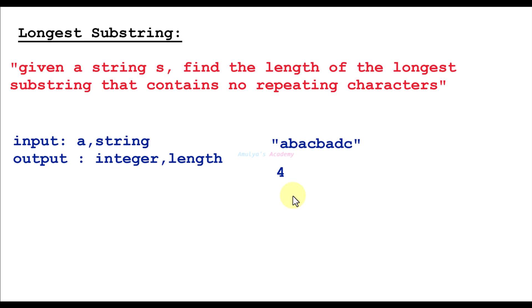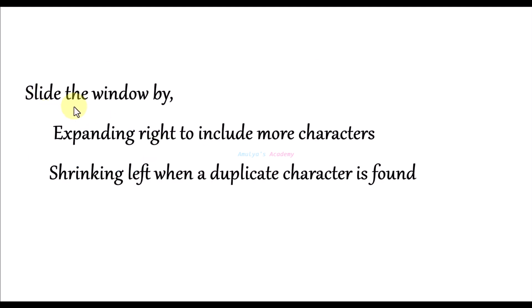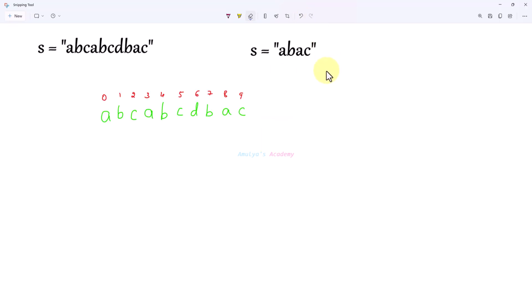To solve this problem we will use the sliding window approach. This approach uses two pointers, left and right, to represent a window of characters in the string that has no repeats. We slide the window by expanding right to include more characters, and shrinking left when a duplicate character is found. A little bit confusing? Don't worry, let's take an example.